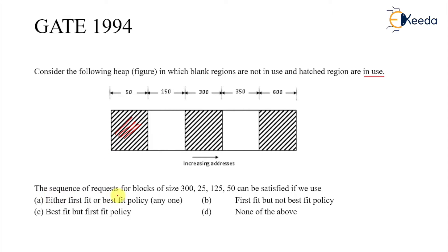The sequence of requests for blocks of size 325, 125, and 50 can be satisfied if we use: either first fit, best fit, first fit, best fit, first fit but not best fit, best fit but not first fit, or none of both.